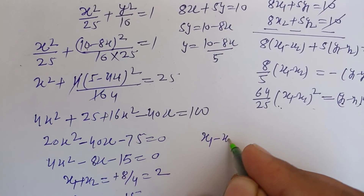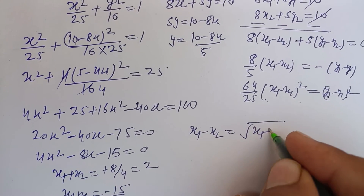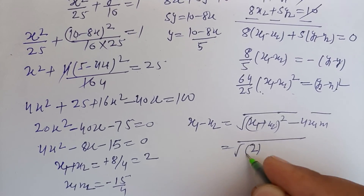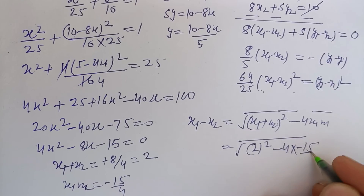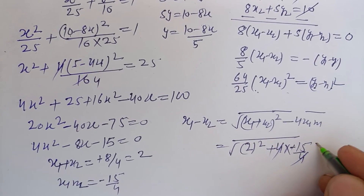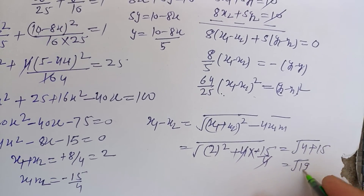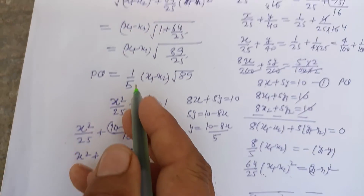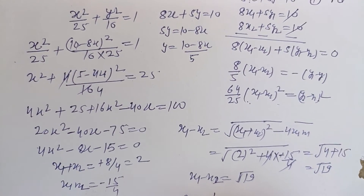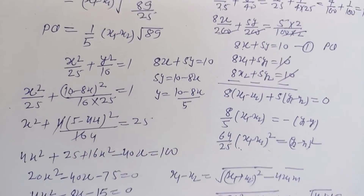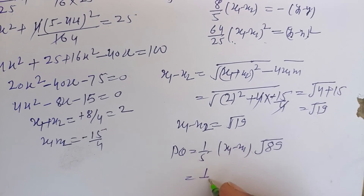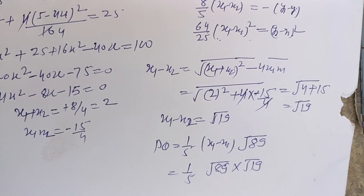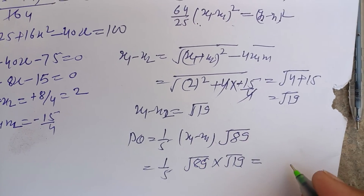Finding x₁−x₂: (x₁−x₂) = √[(x₁+x₂)² − 4x₁x₂] = √[4 − 4·(−15/4)] = √[4 + 15] = √19. Substituting back: PQ = (1/5)·√19·√89 = (1/5)·√(19×89).